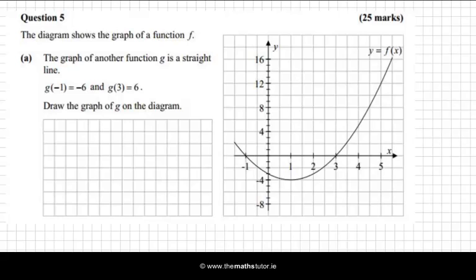We have to draw the graph of g on the diagram. Let's choose the color blue. When x is -1, g is -6, so we go down to -6. That's here. And when x is 3, g(3) is +6, so that's here. We're told it's a straight line, so I can join these up.